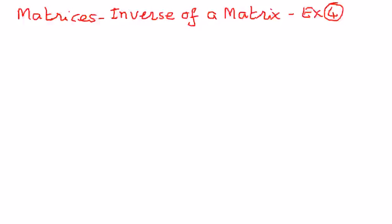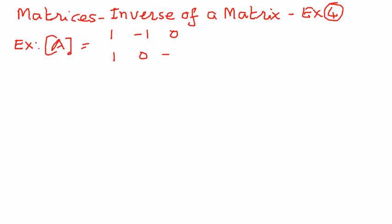The matrix we have in this example is as follows. Let's say A is a matrix, and the elements of this matrix are 1, negative 1, 0, and then 1, 0, negative 1, and then negative 6, 2, 3. So we have a 3 by 3 matrix, and we are going to use the Gauss-Jordan elimination method.